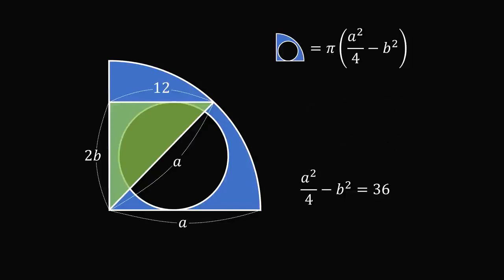All we need to do now is substitute in for a squared over 4 minus b squared. So we get the area shaded in blue is equal to 36 pi. And amazingly, we solve for the answer without knowing the radius of either the quarter circle or the small circle.